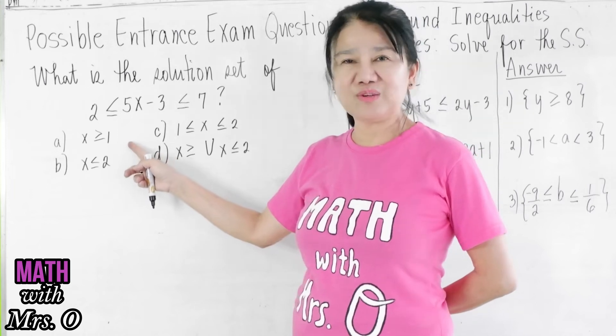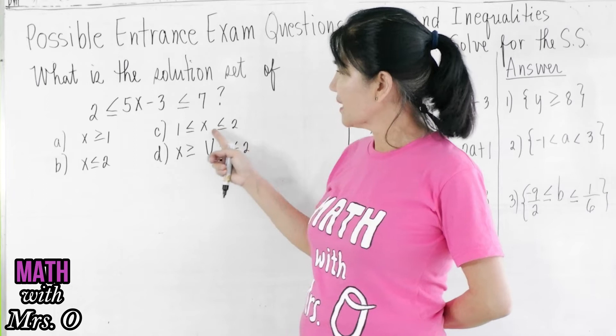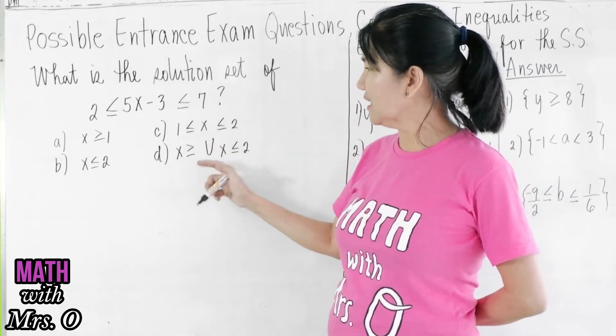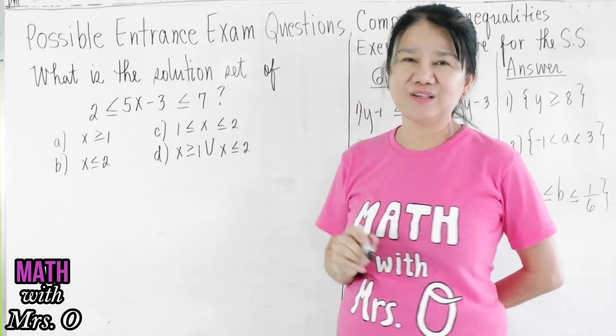Letter A, x greater than or equal to 1. Letter B, x is less than or equal to 2. Letter C, x is greater than or equal to 1 and less than or equal to 2. Or letter D, x is greater than or equal to 1 union x is less than or equal to 2.